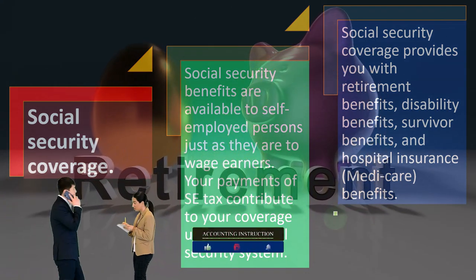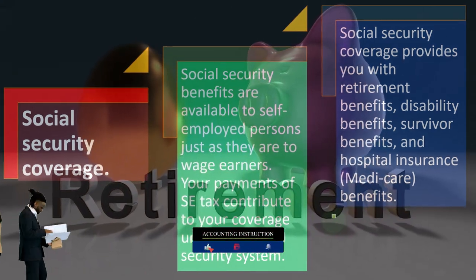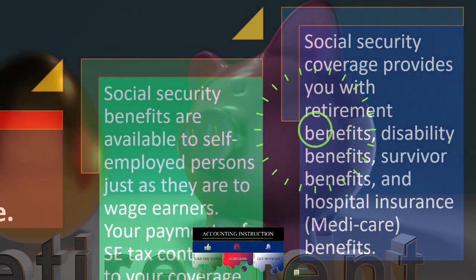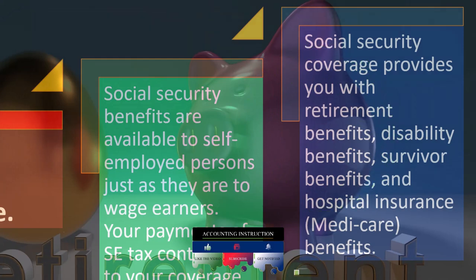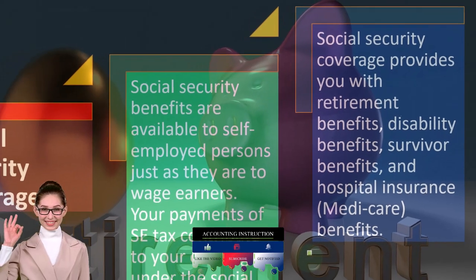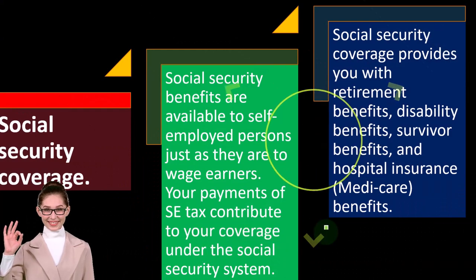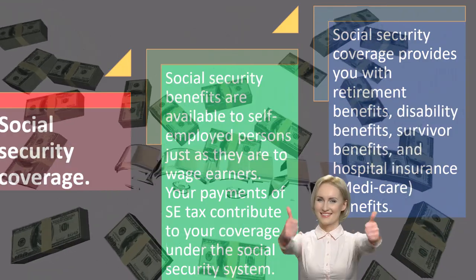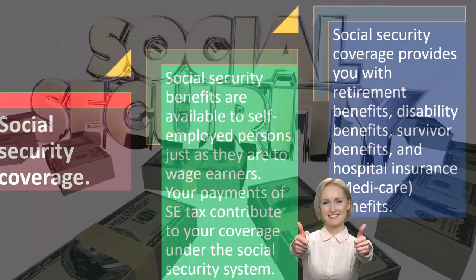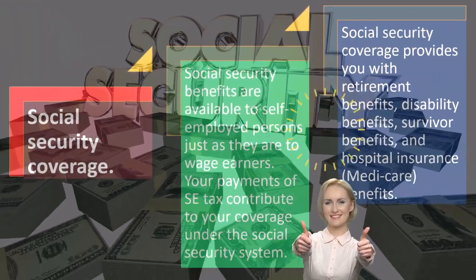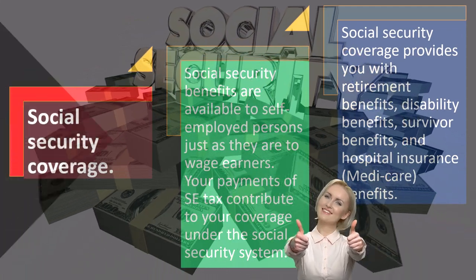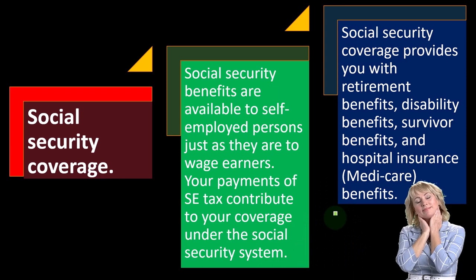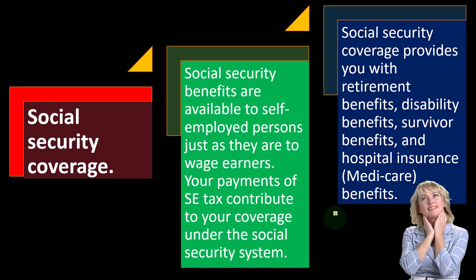When thinking about Social Security, there are two sides: the tax side when you're paying in, and the benefits side when you're in retirement receiving payments. Social Security and Medicare were put in place during the Great Depression in the 1930s as a safety net program — for people who lost savings or outlived their savings. Over time it grew from a safety net into something more like a government-based retirement program that everyone pays into substantially.